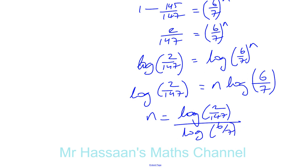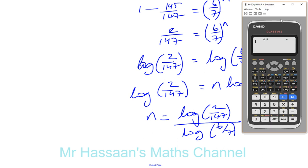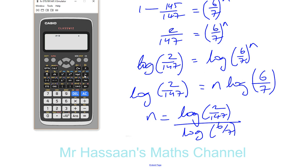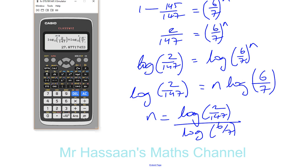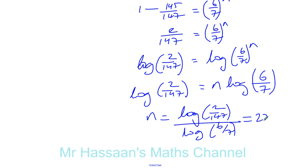Let's see what that gives us on the calculator. We put log base 10 of (2 divided by 147), divided by log base 10 of (6 over 7), and that gives us the answer: 27.877.